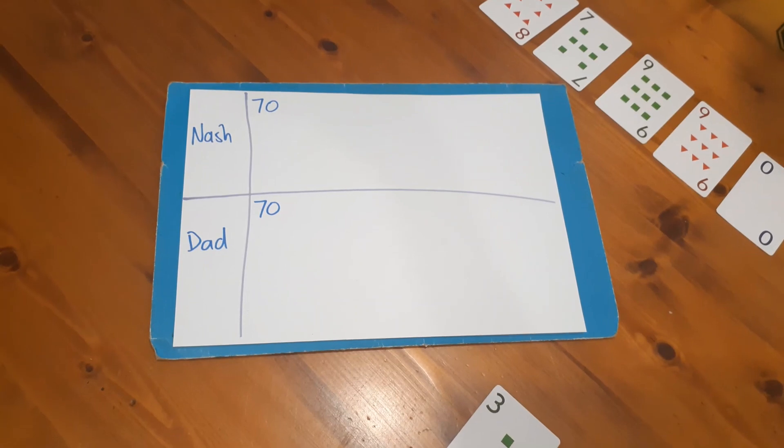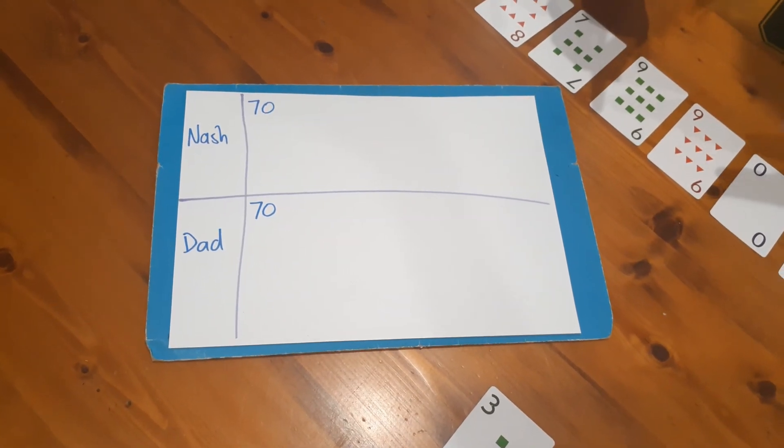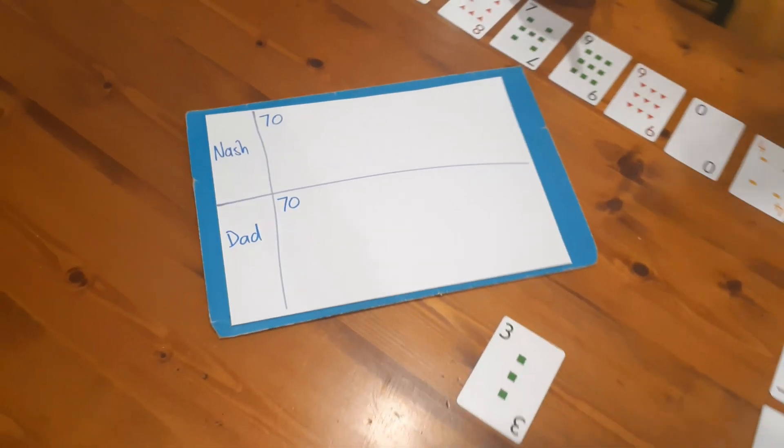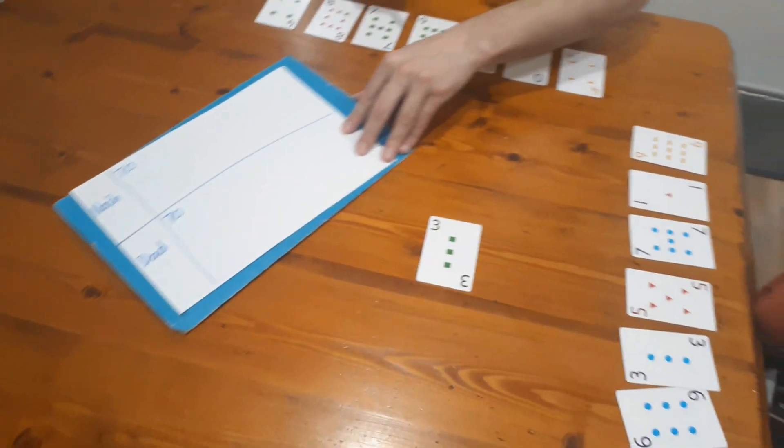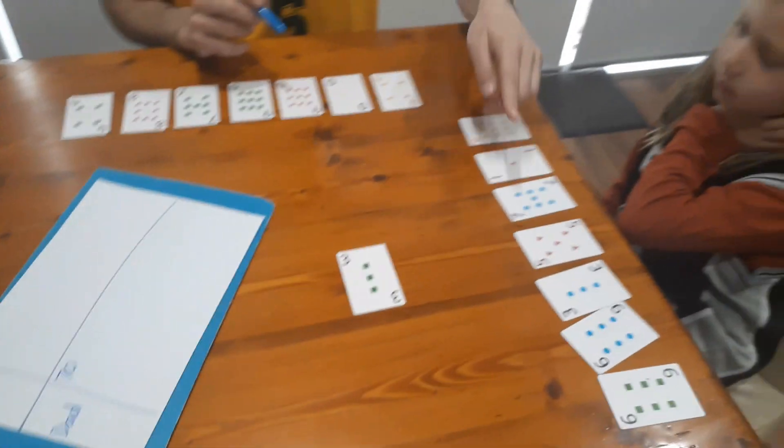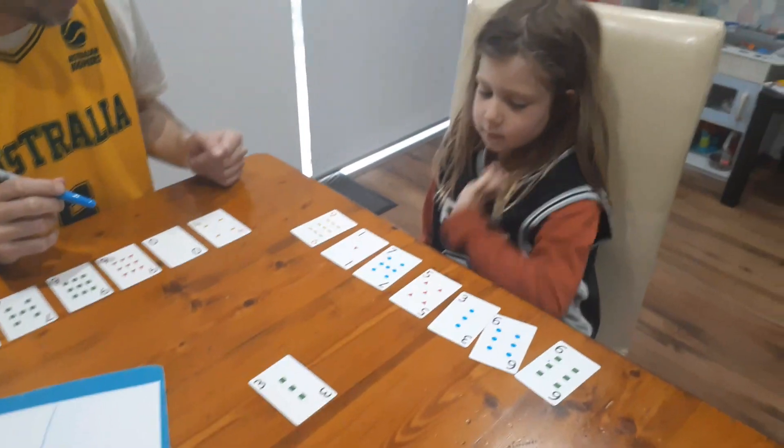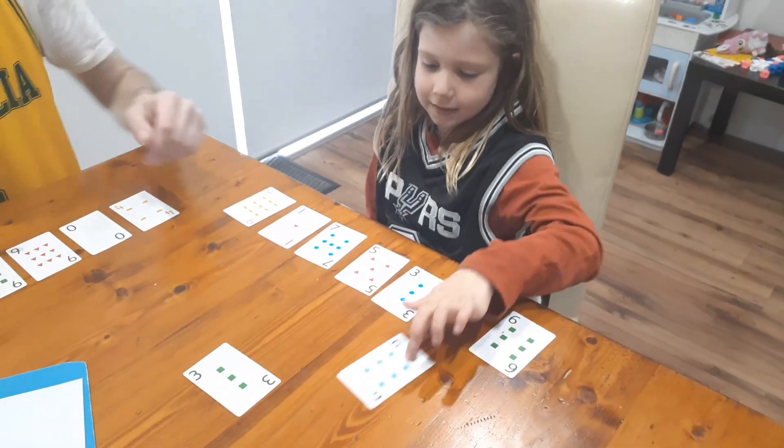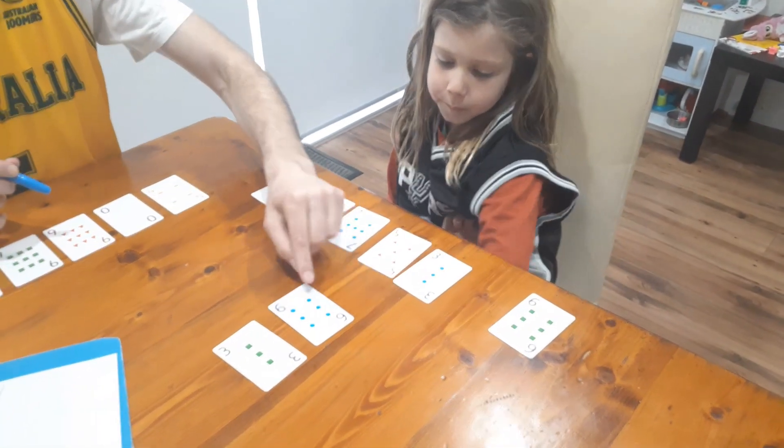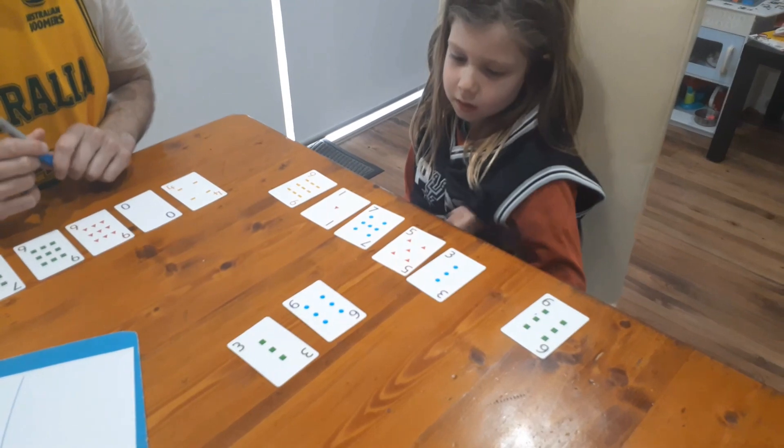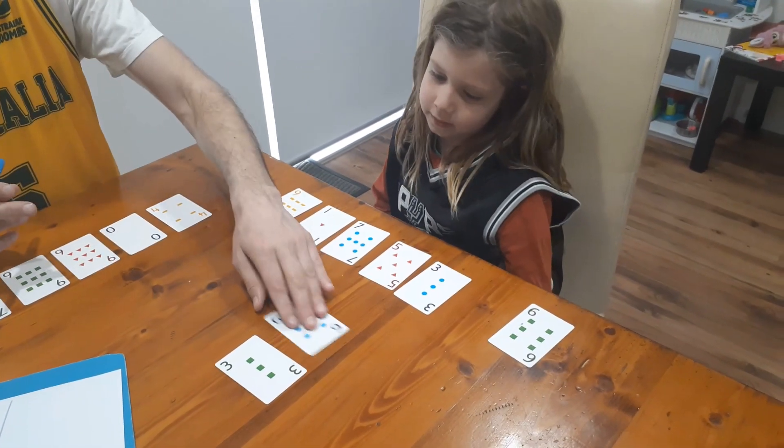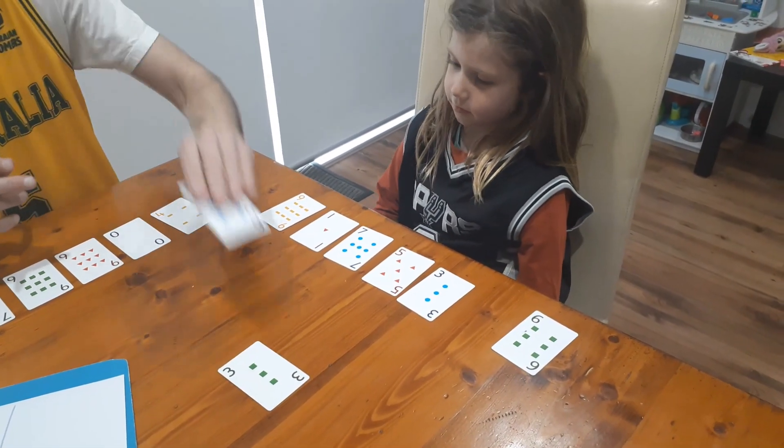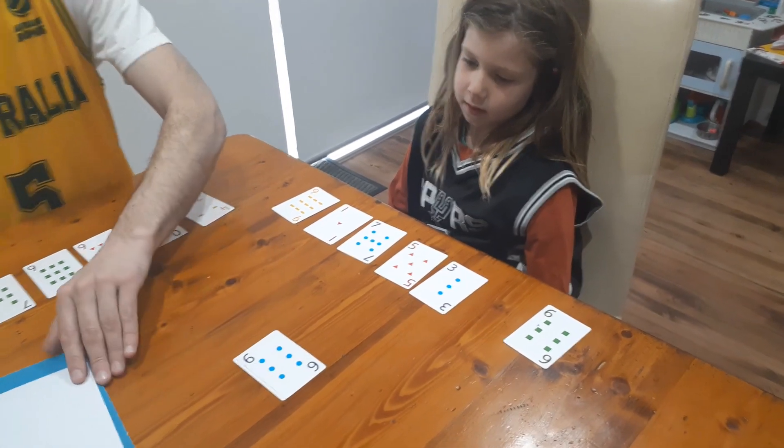The game's called Road to 35 - closest to 35 wins. Nash, do you want to go first? Yes. Okay, so Nash is going to choose a card from his collection. Six, right? So what's the difference between your card and the target card? Okay, so he scores three points and puts that on top.